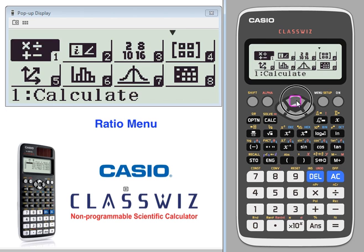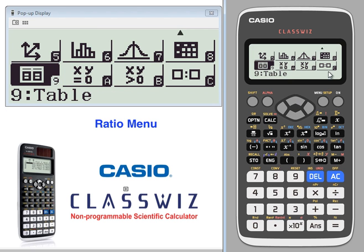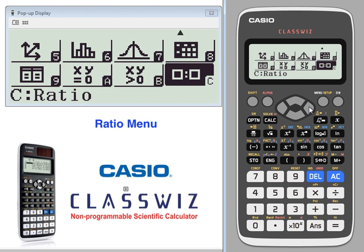Using the ratio menu, let's toggle up. The ratio menu is the very last one, letter C.